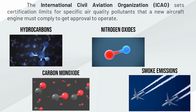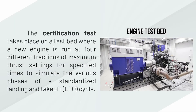The International Civil Aviation Organization sets certification limits for specific air quality pollutants that a new aircraft engine must comply with to get approval to operate. These standards cover hydrocarbons, nitrogen oxides, carbon monoxide, and smoke emissions. This certification test takes place on a testbed where a new engine is run at four different fractions of maximum thrust settings for a specified time to simulate the various phases of a standardized landing and takeoff, or LTO cycle.